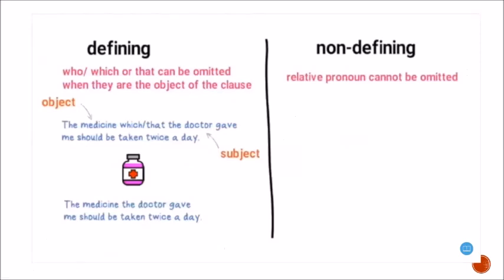'Who,' 'which,' or 'that' can be omitted when they are the object of the clause. Example: 'The medicine which/that the doctor gave me should be taken twice a day.' Here 'medicine' is the object and 'doctor' is the subject, so we can say: 'The medicine the doctor gave me should be taken twice a day.' Again, we cannot omit 'who,' 'which,' or 'that' with non-defining relative clauses.